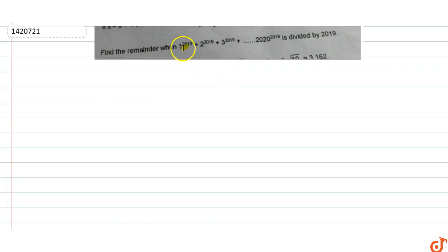In this question, find the remainder when 1 raised to power 2019 plus 2 raised to power 2019 plus 3 raised to power 2019 up to 20 raised to power 2019 is divided by 2019. We have to find the remainder.